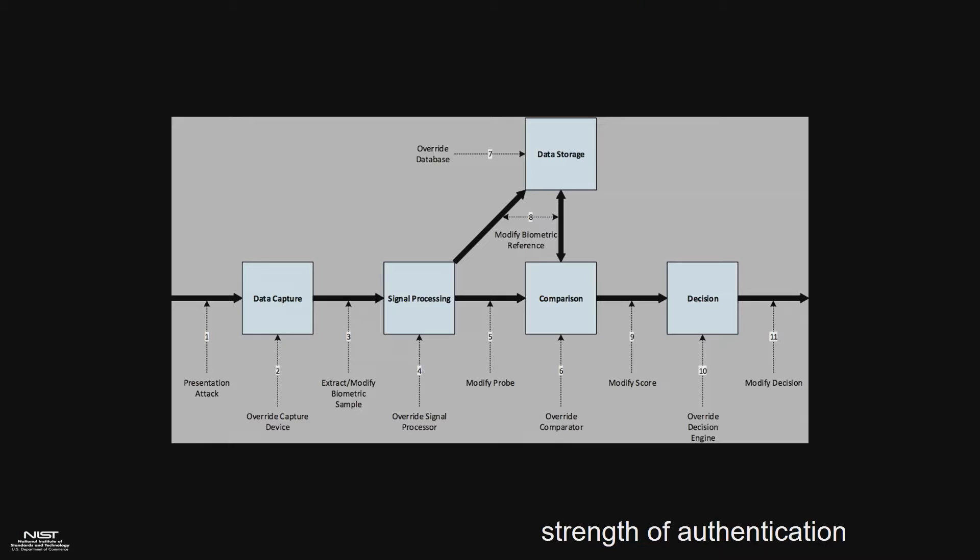Again, not to give away too much information, but to allow agencies and private sector entities to make an appropriate risk-based decision. Strength of authentication — this is a pretty busy chart. The first thing we're focusing on is biometrics, for two reasons. One, we can't ignore what's going on in the consumer marketplace.